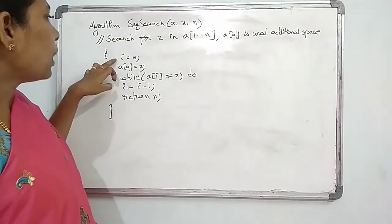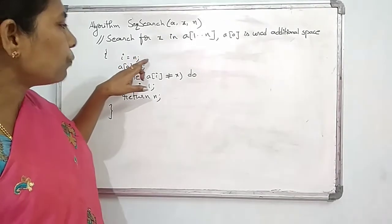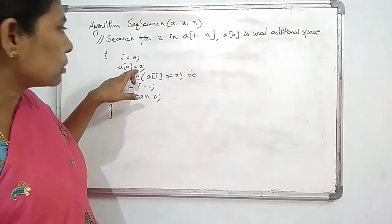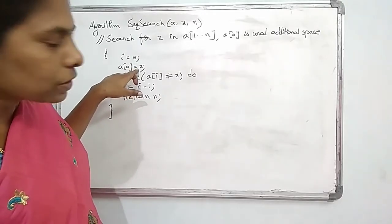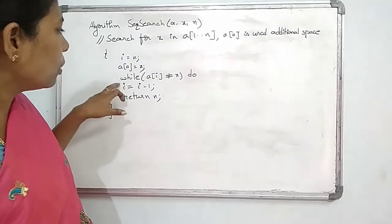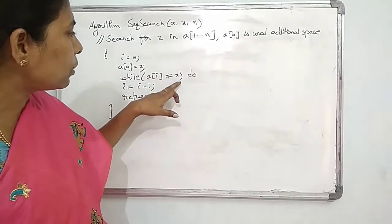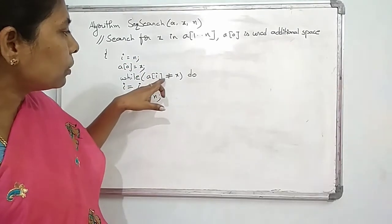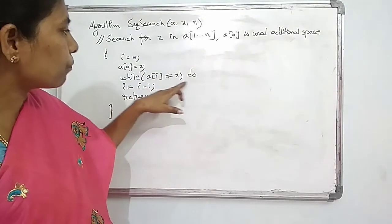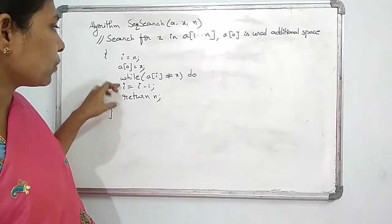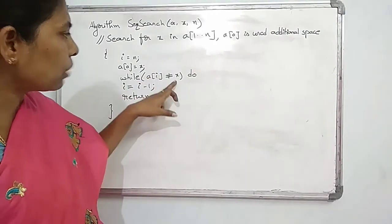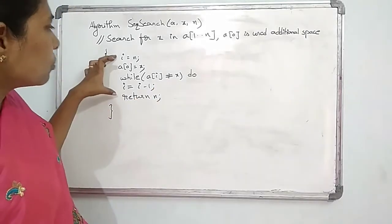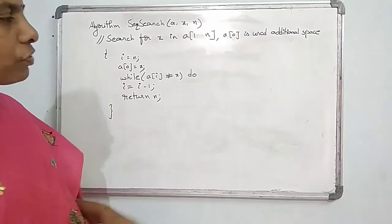The algorithm: I equals N. First, initialize N value to A. A of 0 is equal to X — the element you want to find is stored at A of 0. While A of I is not equal to X, start from the N-th element. If A of N is not equal to X, perform I equals I minus 1. If it is equal to X, return the value of N. This is the process of the sequential search.